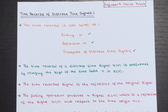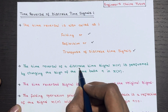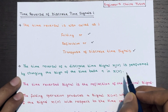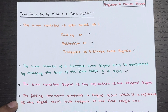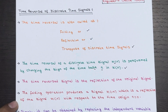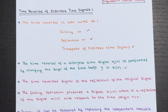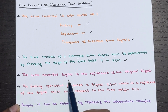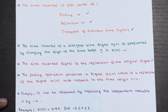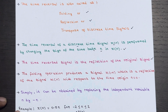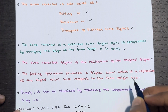The time reversal of a discrete time signal X of n is performed by changing the sign of the time base n. When we perform time reversal, we essentially create a reflection of the original signal — it's like looking at the signal in a mirror. The time reversed signal is the reflection of the original signal.